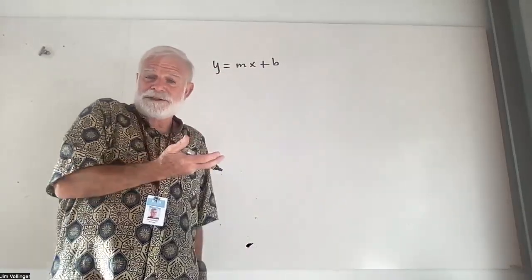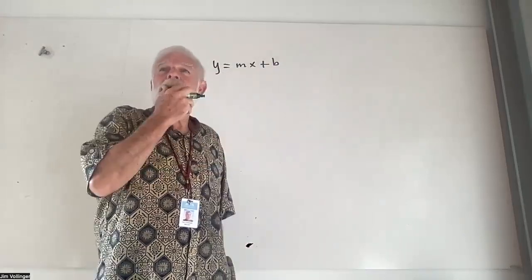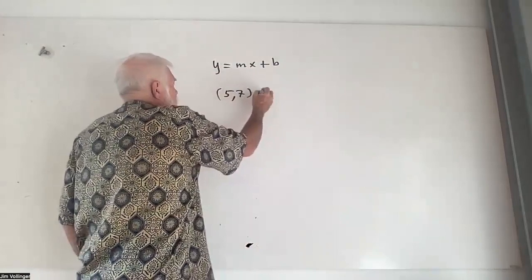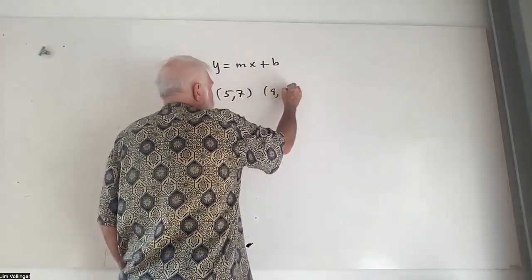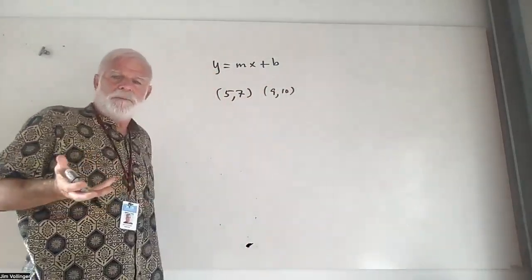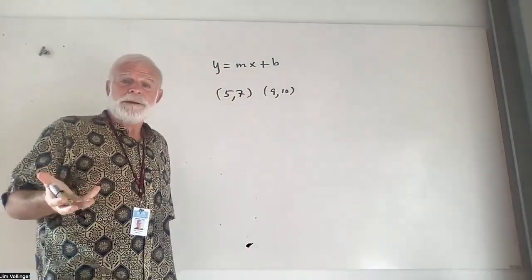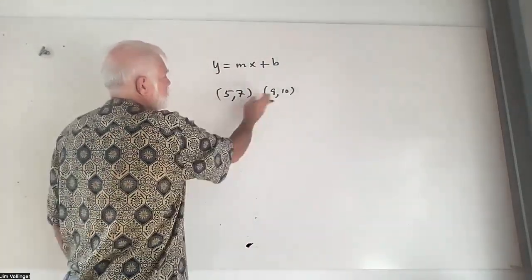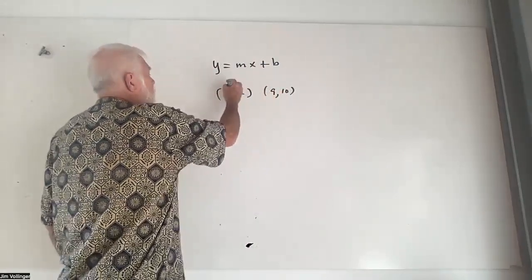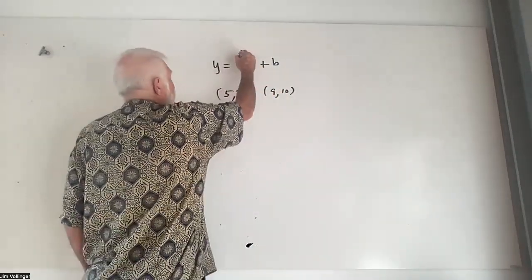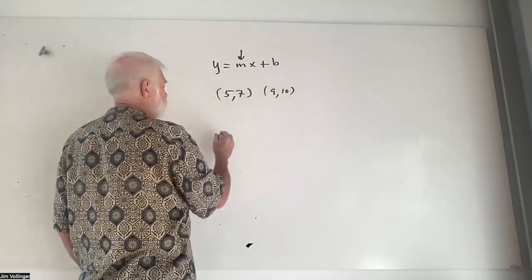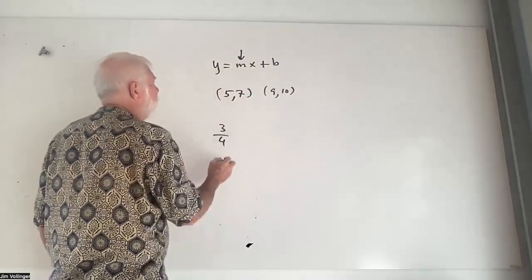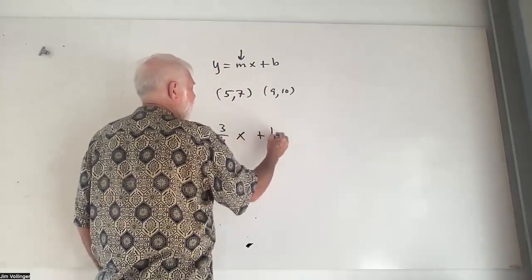So let's say we got the points (5, 7) and (9, 10), and we'll compare it to the way we're learning how to write the equation of a line. You tell me which is easier and which is better. So how do we get this using two points? We do M first. From 5 to 9, the change is 4. From 7 to 10, the change is 3. So M equals three-fourths.